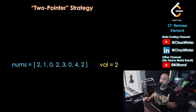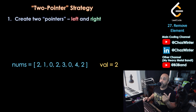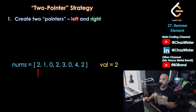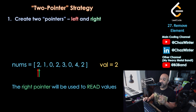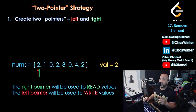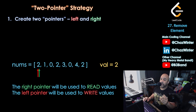So I've got a left pointer, which I'm going to show in red, and a right pointer that I'm going to show in green. The right pointer — the green one — will be used to read values in the array, and the left pointer will be used to write values or copy values in the array. Let's see how the algorithm works.